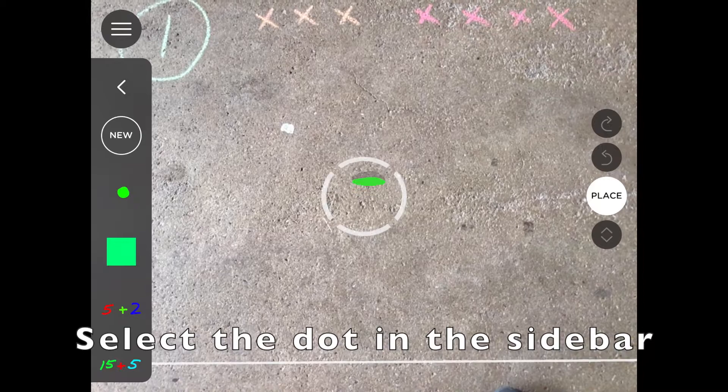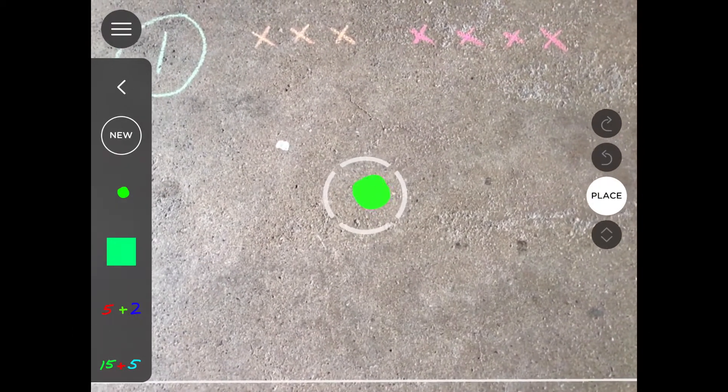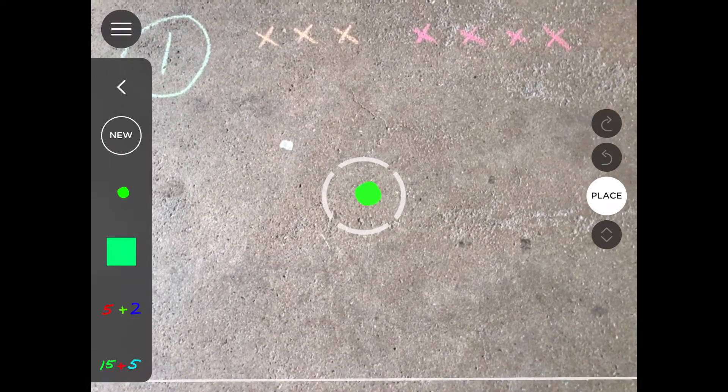Now with AR Maker you can pinch to zoom in and out. You can have it vertical or you can have it horizontal. So for this case we're going to use horizontal.